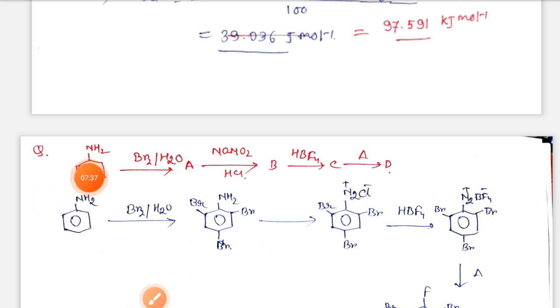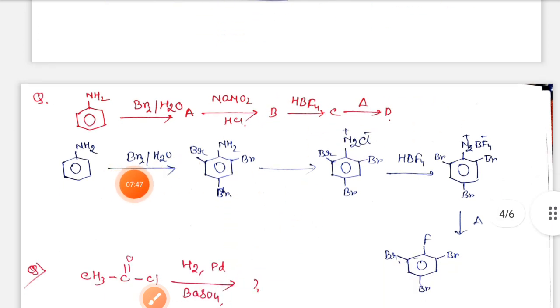Next, aniline with Br2/H2O. NH2 is an electron donating group, so ortho-para positions are electronically rich. All three positions get bromine attached, so tribromoaniline is formed. Then if we give NaNO2/HCl, diazonium salt is produced. Then HBF4 gives N2+BF4- salt.